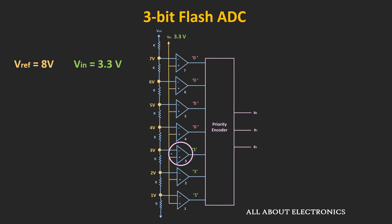On the other hand, if the input is 6.3V, the output of the first 6 comparators will be high. In that case, the encoder gives the binary code corresponding to the sixth input. In this way, the input voltage is converted into the binary code.